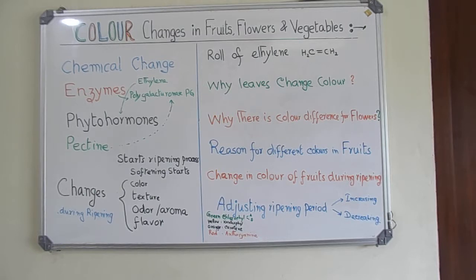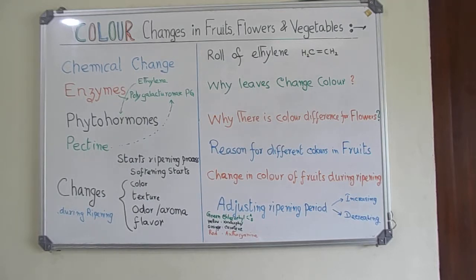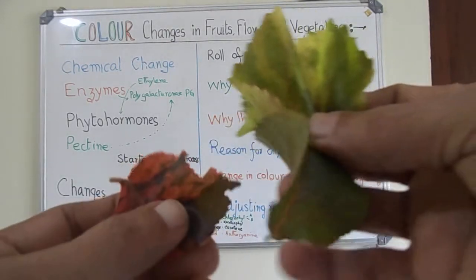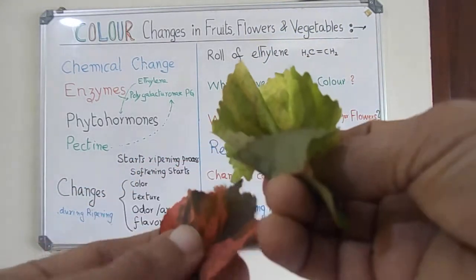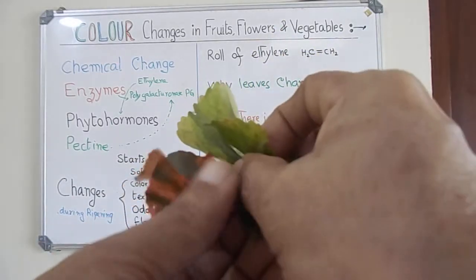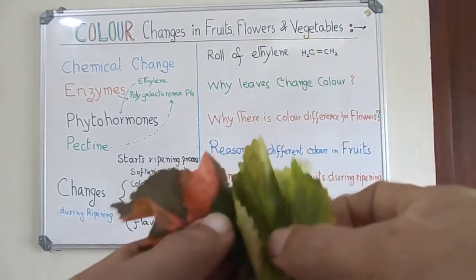Next question: why do leaves change color? You can see various types of leaves of a particular plant — these are leaves obtained from a single croton-like plant in which there are various colors associated with it.